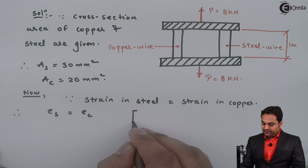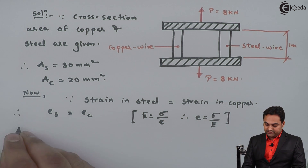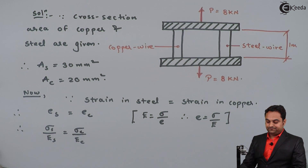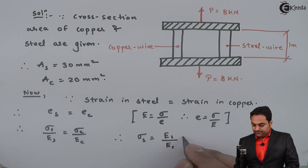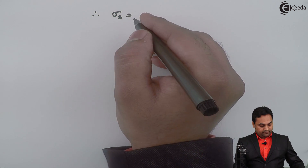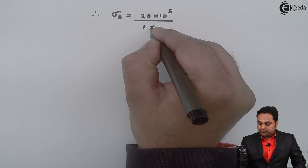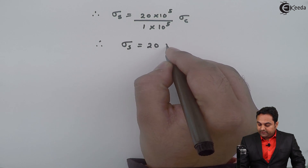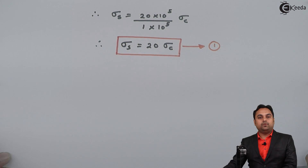From Hooke's Law, Young's modulus equals stress upon strain, so strain equals stress upon Young's modulus. Therefore, stress upon Young's modulus for steel equals stress upon Young's modulus for copper. Rearranging, stress in steel equals Young's modulus of steel upon Young's modulus of copper, multiplied by stress in copper. Putting in the values — 20 into 10 raised to 5 for steel and 1 into 10 raised to 5 for copper — stress in steel equals 20 times sigma C. This is equation number one.